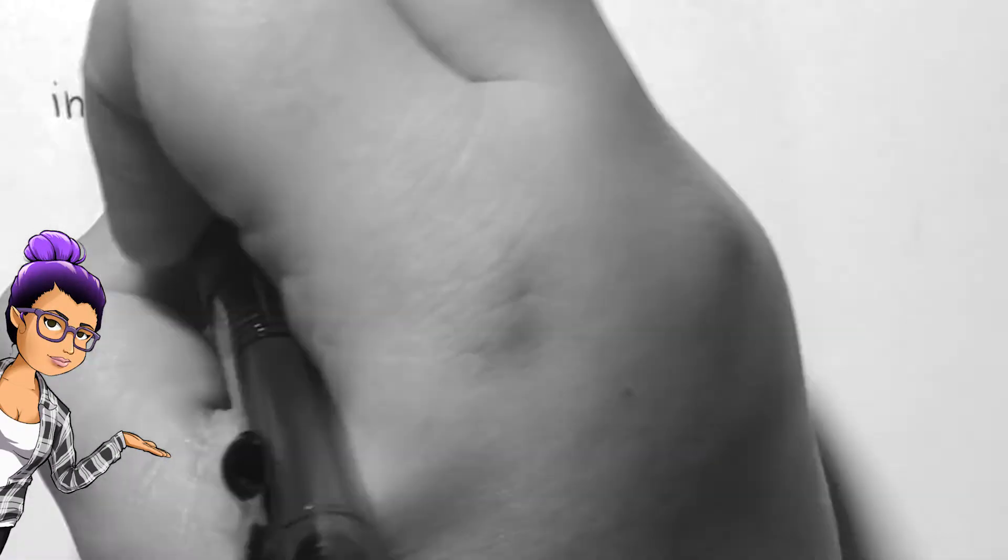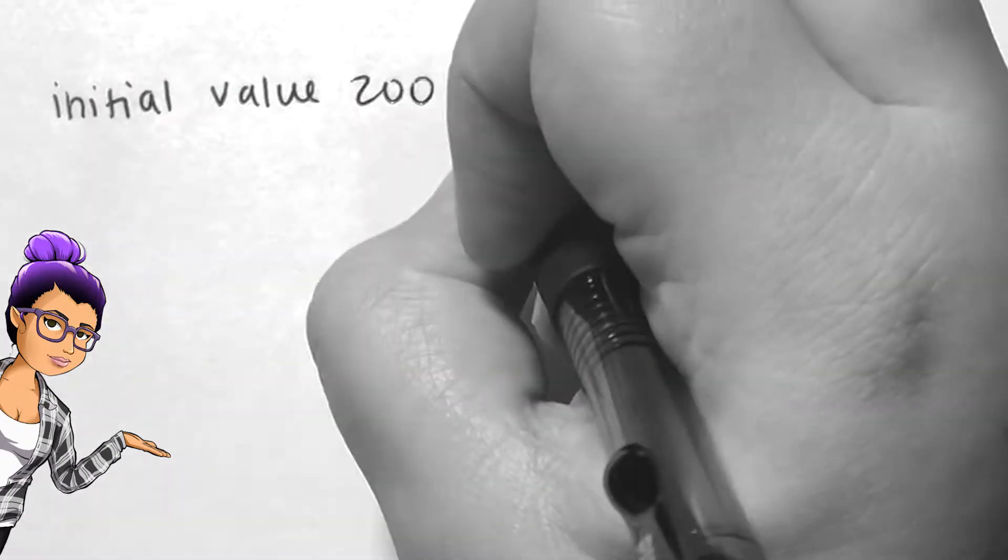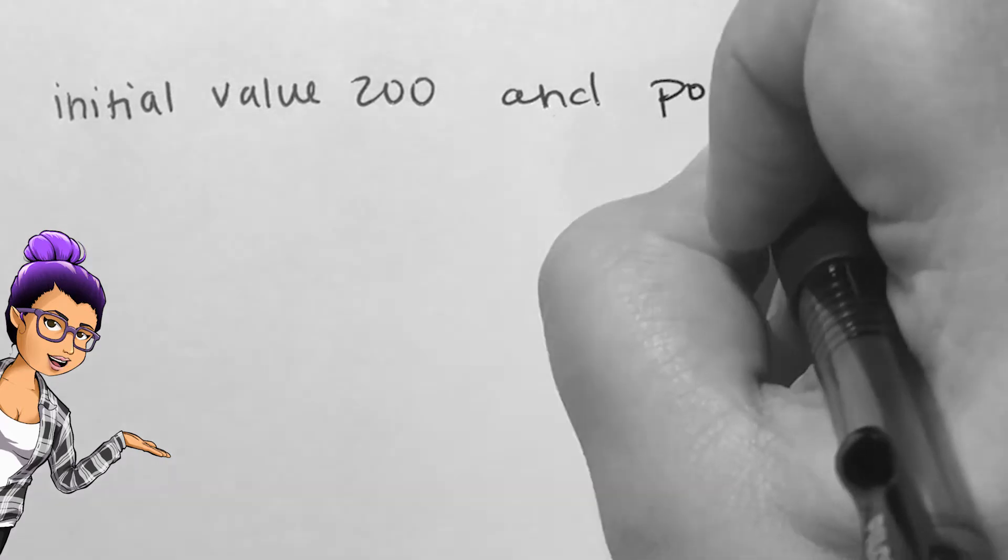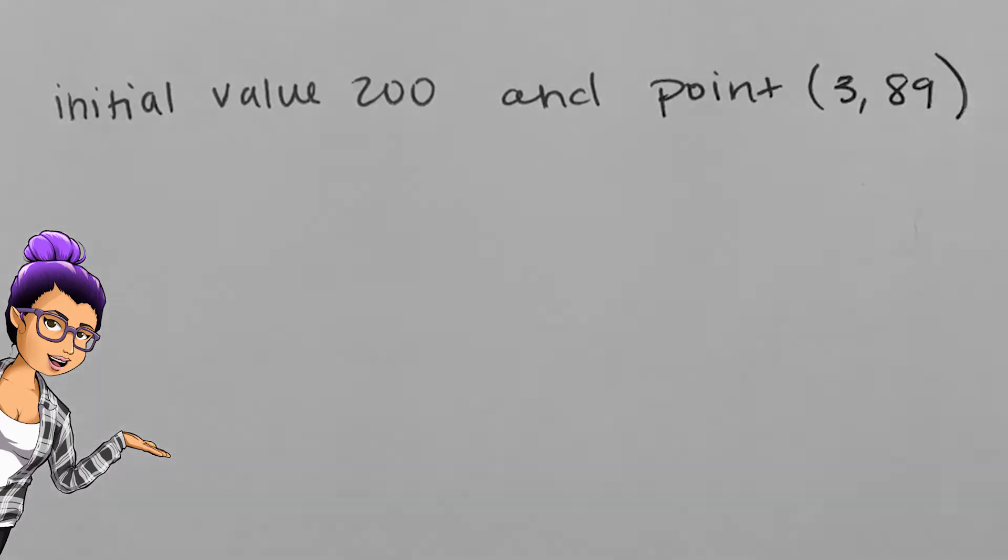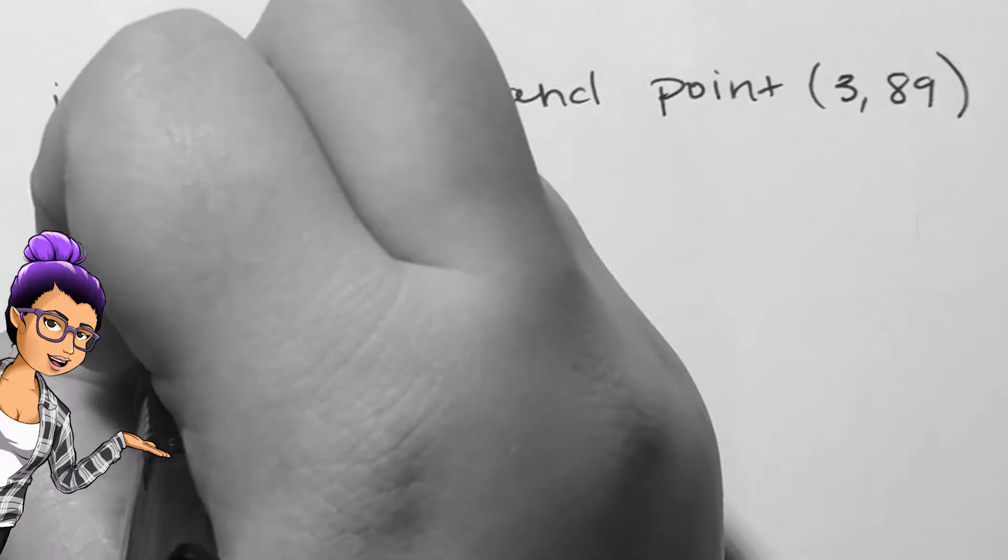If the function has an initial value of 200 and passes through the point (3, 89), we will need to do additional work besides using our knowledge of percentage growth rates.